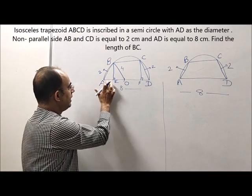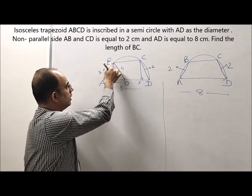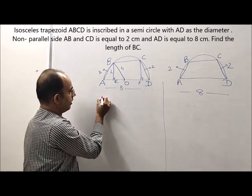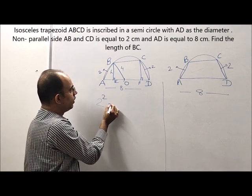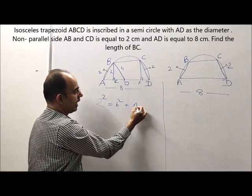AE would be equal to DF since it is an isosceles trapezium. So let us first find AE. Now if this height is H, using Pythagoras theorem: 2 square is equal to H square plus AE square.